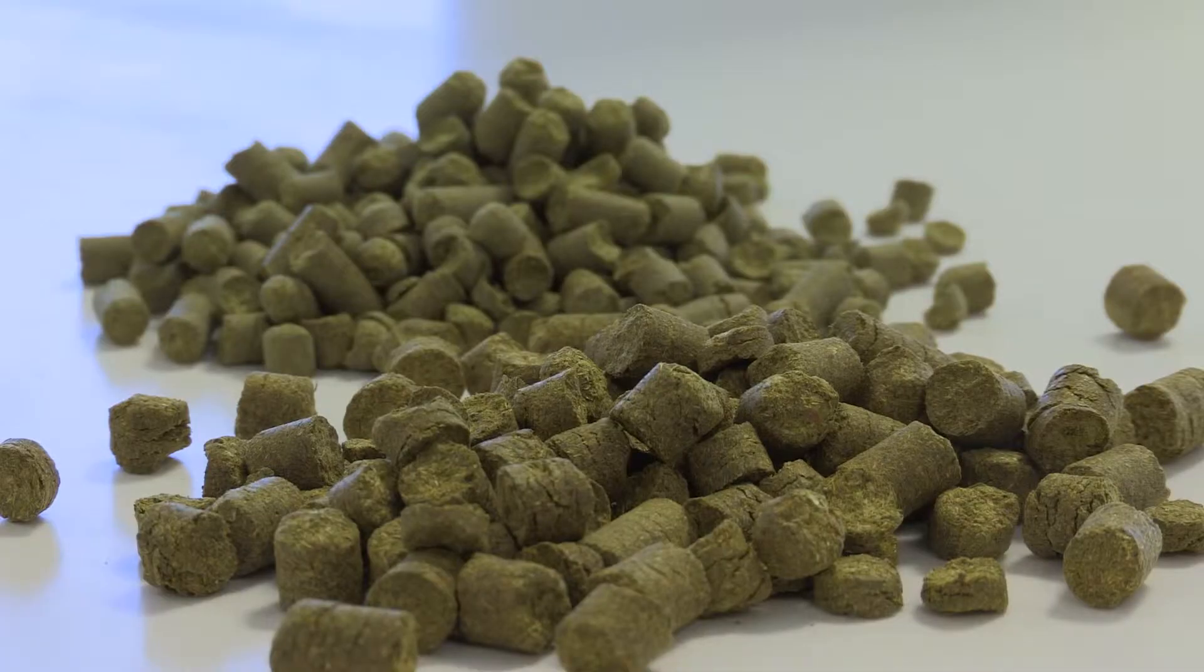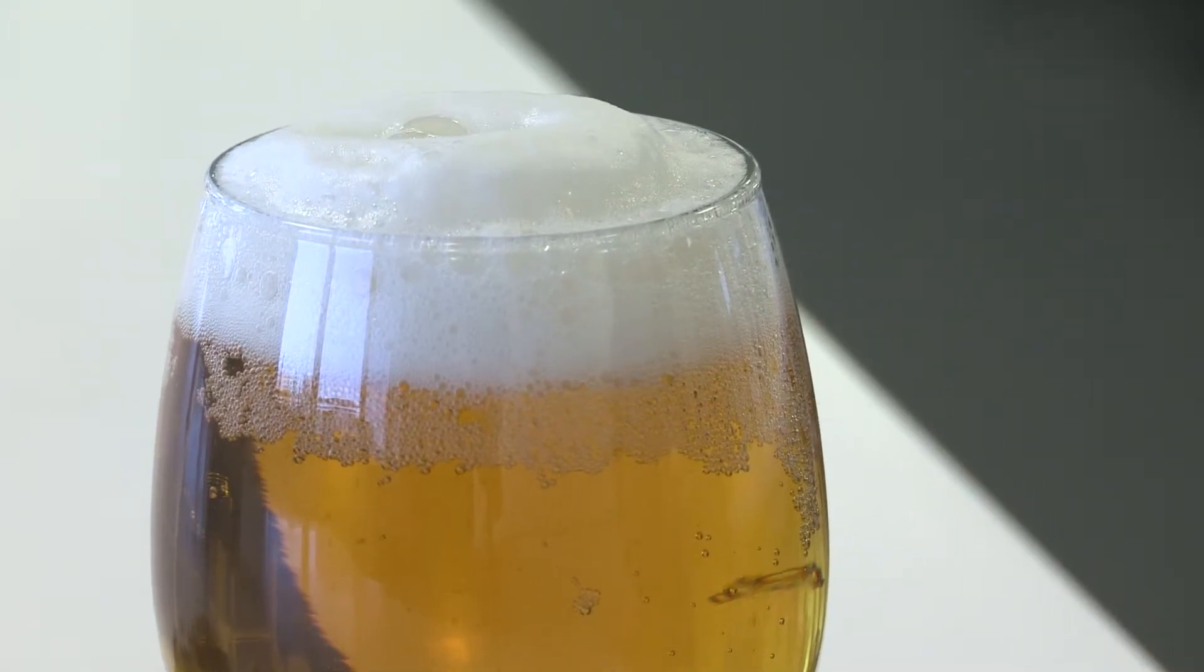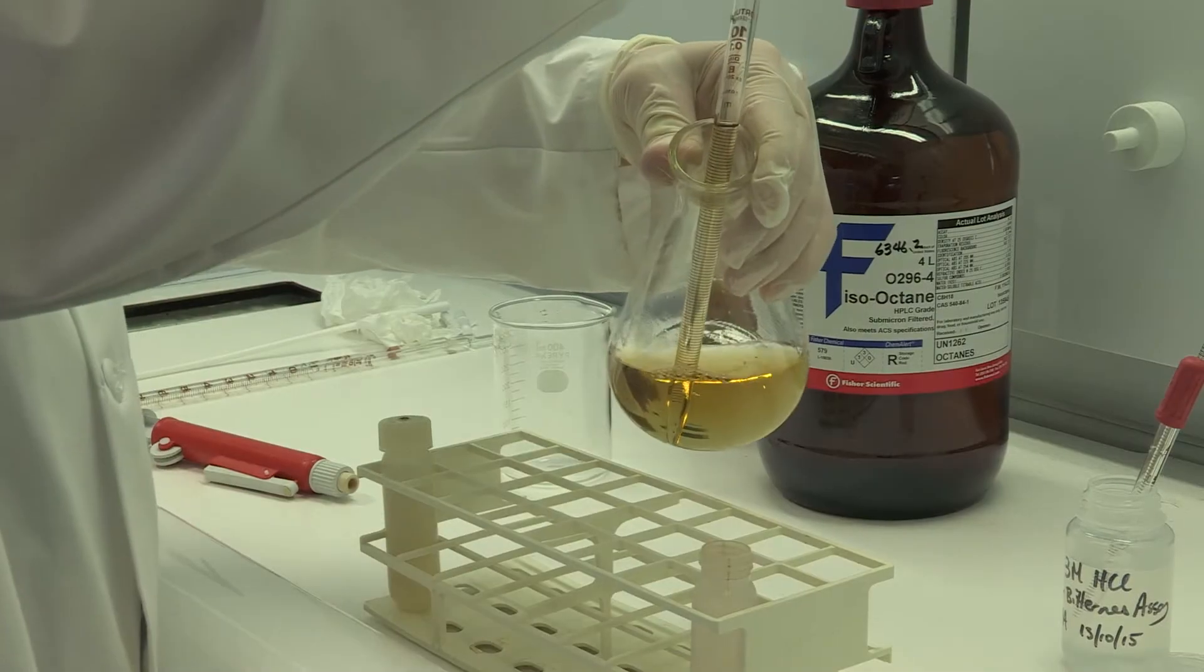The important aspect of measuring bitterness in our beer is that we don't produce foam. Foam contains significant amounts of iso-alpha acids, so they'll be lost during excessive foaming.